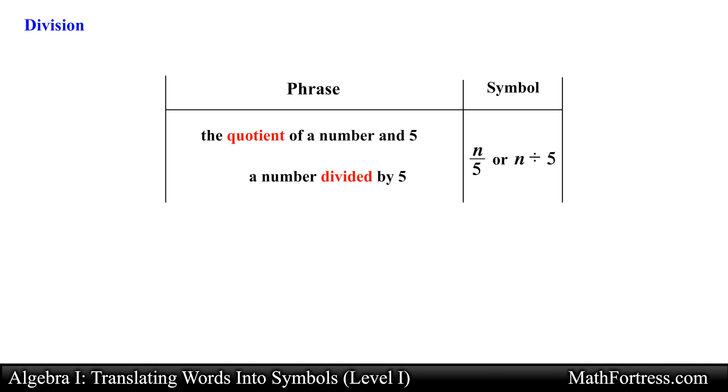Let's transition to our final operator, division. The common phrases that are linked to division are the words quotient as in the quotient of a number and 5 and the word divided as in a number divided by 5. Notice that division can be written using a fraction bar or with the traditional division symbol. For the most part this classical division symbol will be used less and less in your studies of mathematics.